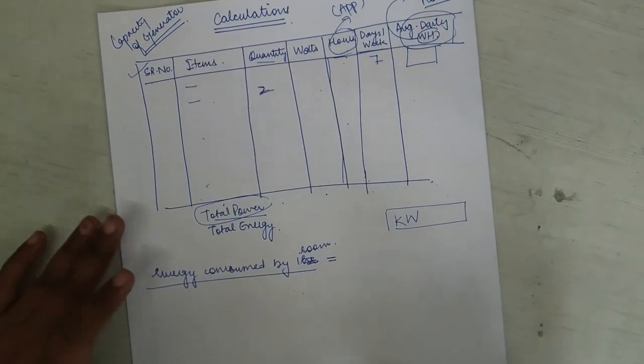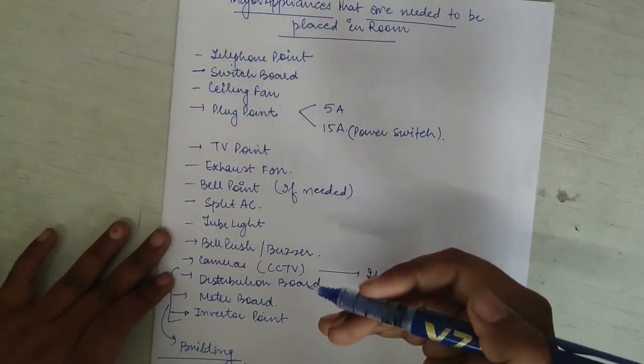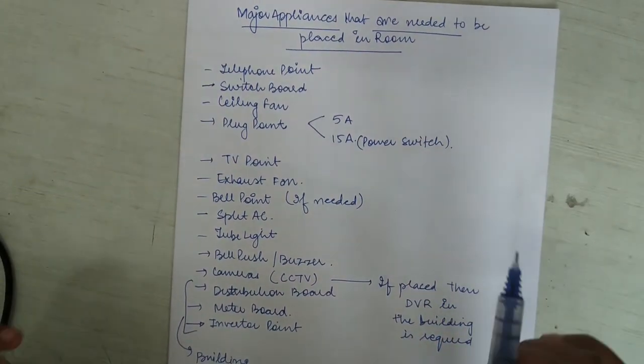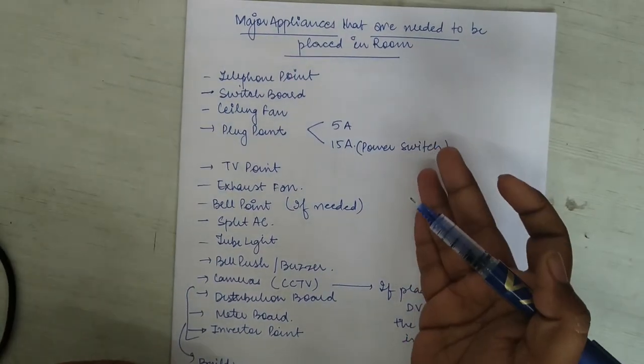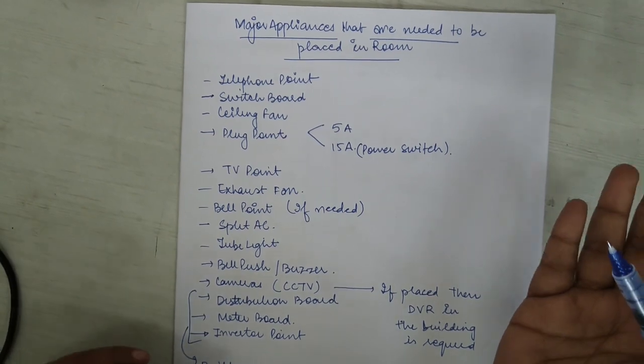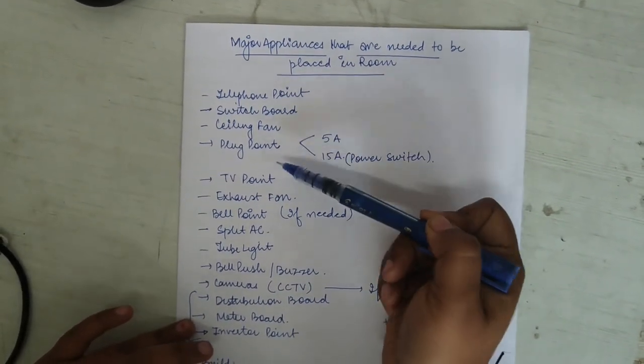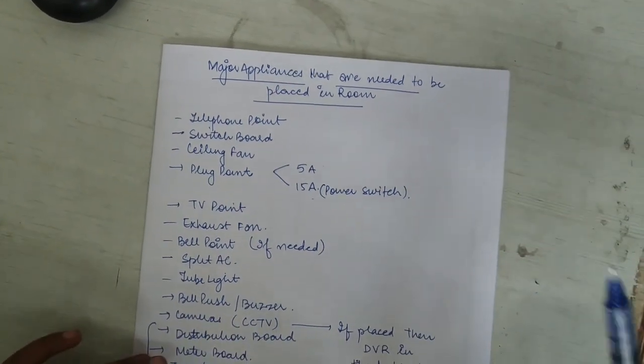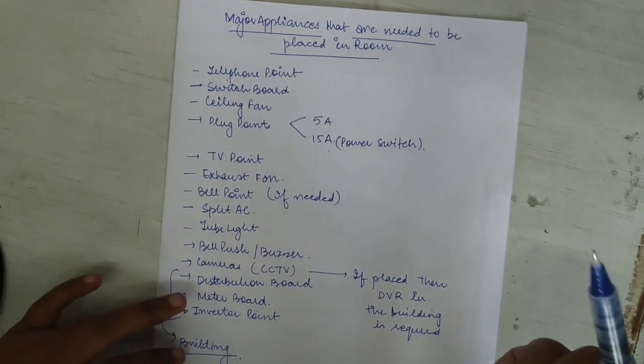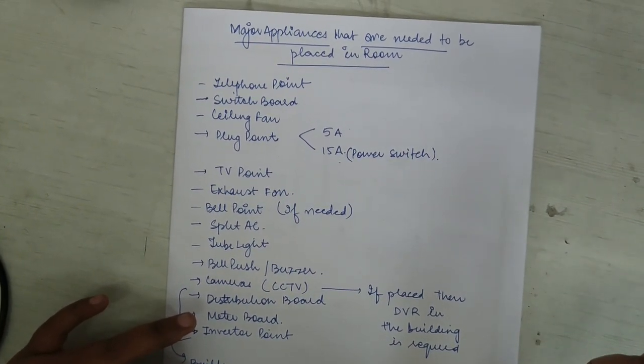So the major appliances: I am telling you a list of the major appliances that need to be placed in a room. In addition to these appliances, you can add whatever appliances you want. A telephone point, switchboard, ceiling fan, plug points—both of 5 amperes and 15 amperes. 15 amperes is the power switch that needs to be there. And please take care of the heights which you are taking for it.